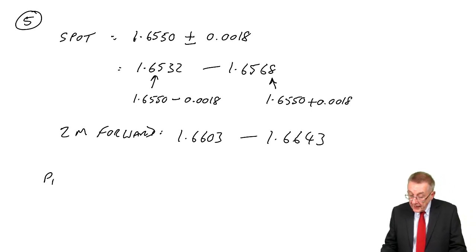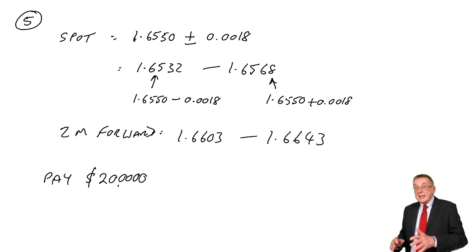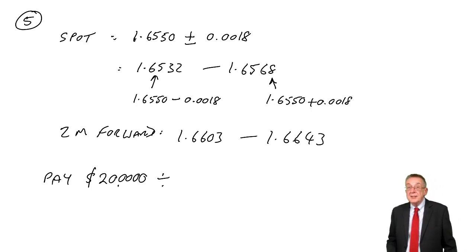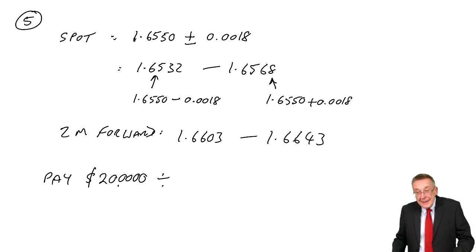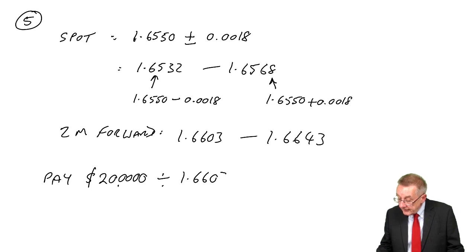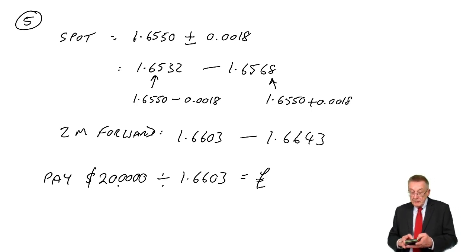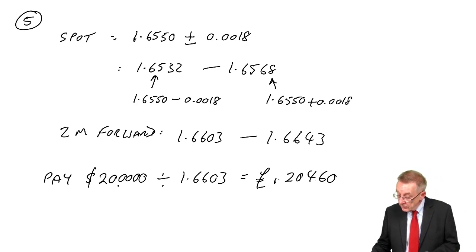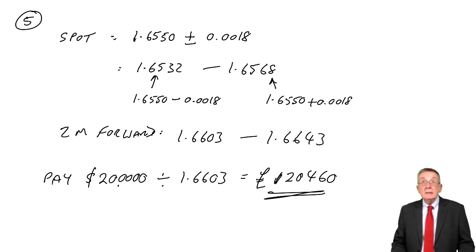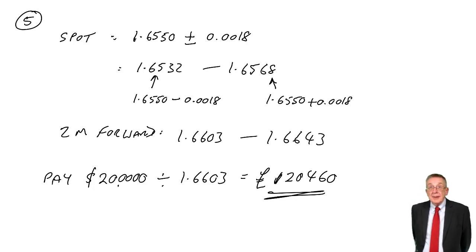How much are we converting? We're paying 200,000. It's 1.6 dollars equals a pound, so we'll divide by the relevant rate. And which rate will we use? We're buying dollars. We'll convert at the lower rate, which will give us the biggest cost. And so, the cost in pounds is 120,460. And again, assuming we've agreed to that rate today, the conversion will take place in two months' time. And the cost will be fixed to 120,460.